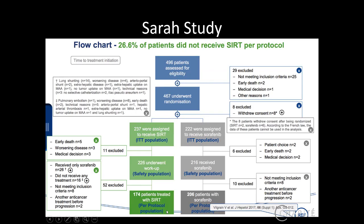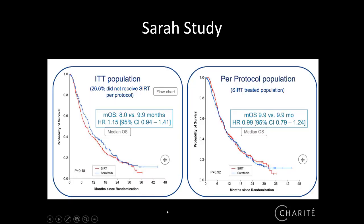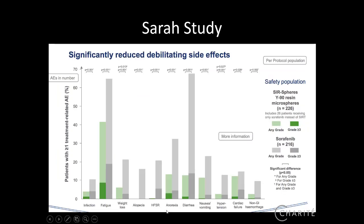What they did find was significantly reduced side effects in the SIRT group: less skin rash, less fatigue syndrome, less weight loss. There was no significant difference in overall survival, but quality of life was also significantly better for patients undergoing SIRT compared to sorafenib.